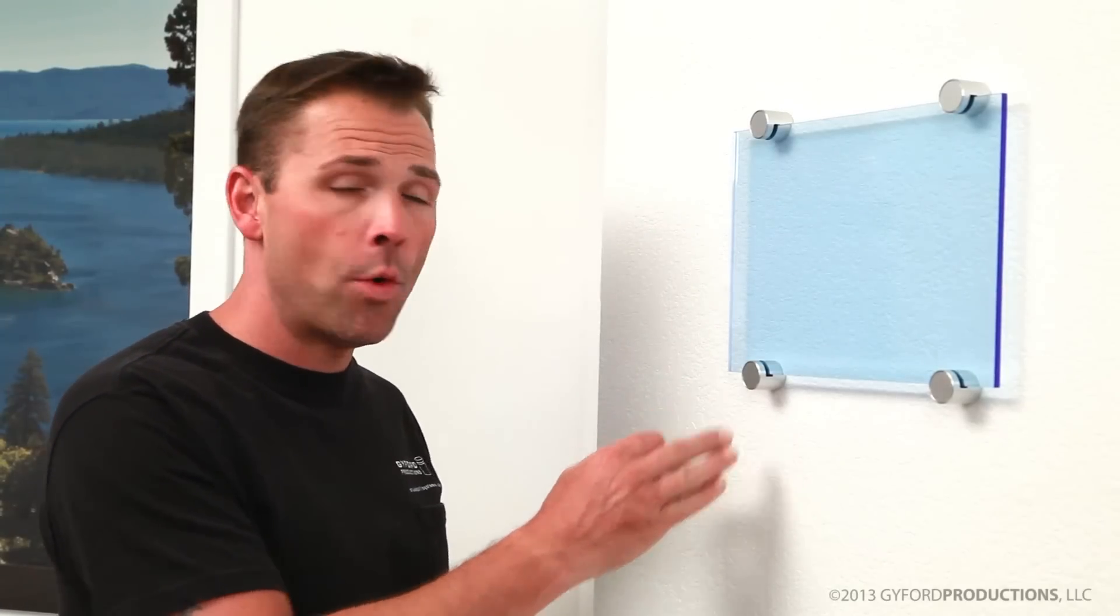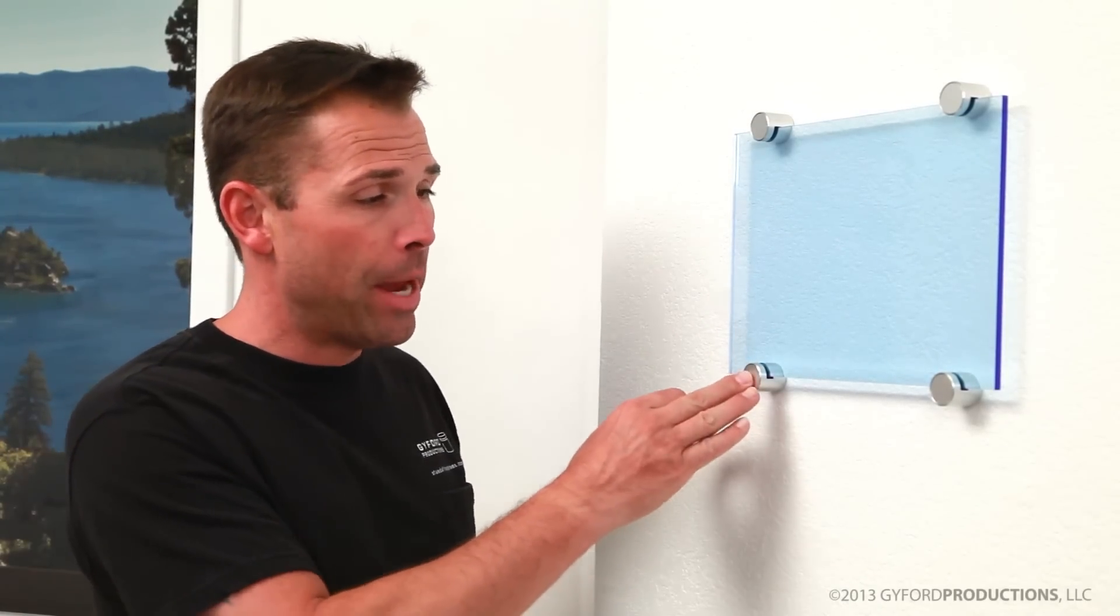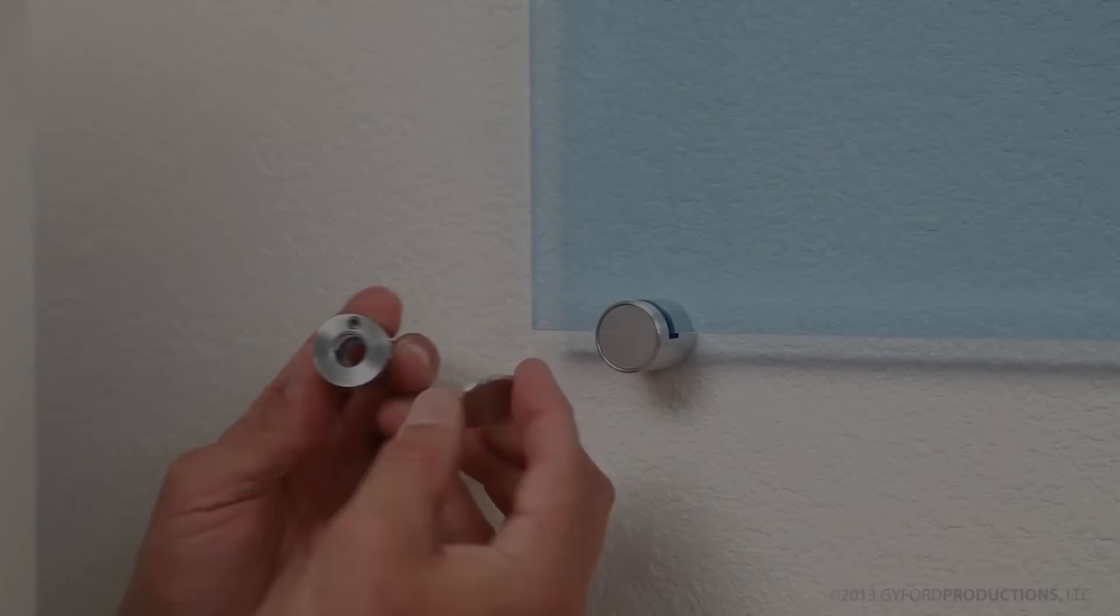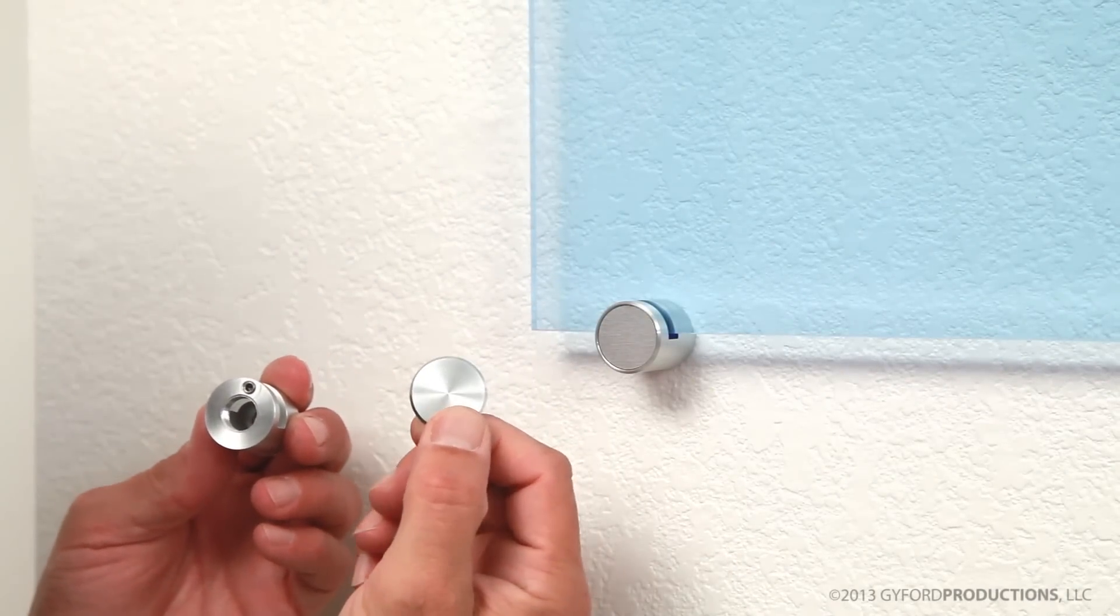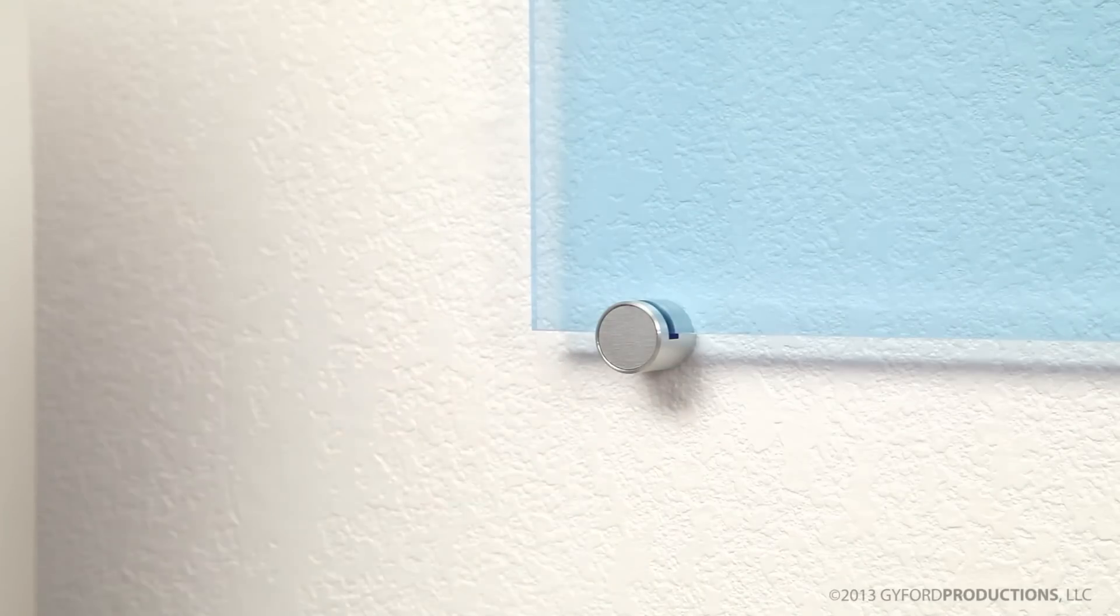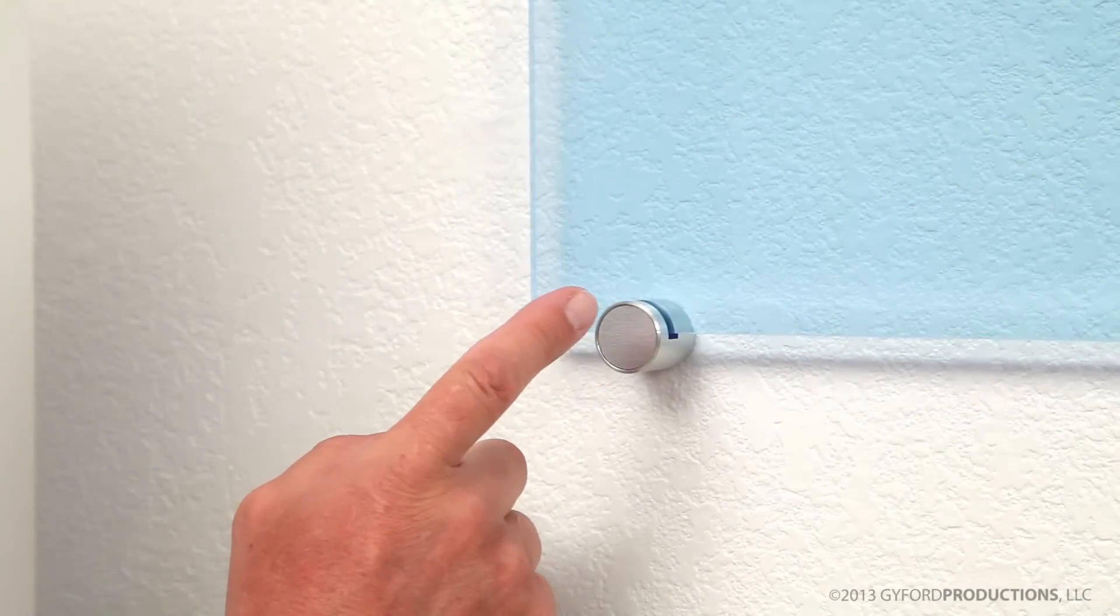So this style is the SOAEGC 250 which uses the adhesive back disc as you can see. And then here we have the SOAEGTC 250 which uses a threaded cap. So here again with the SOAEGC adhesive disc.